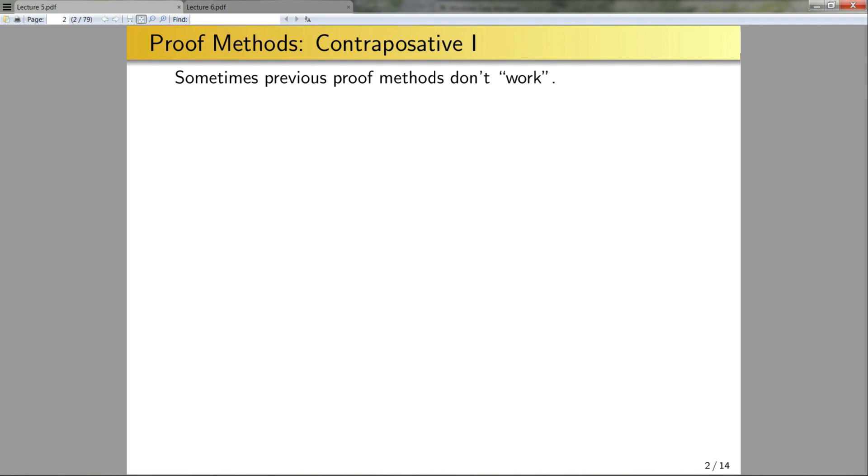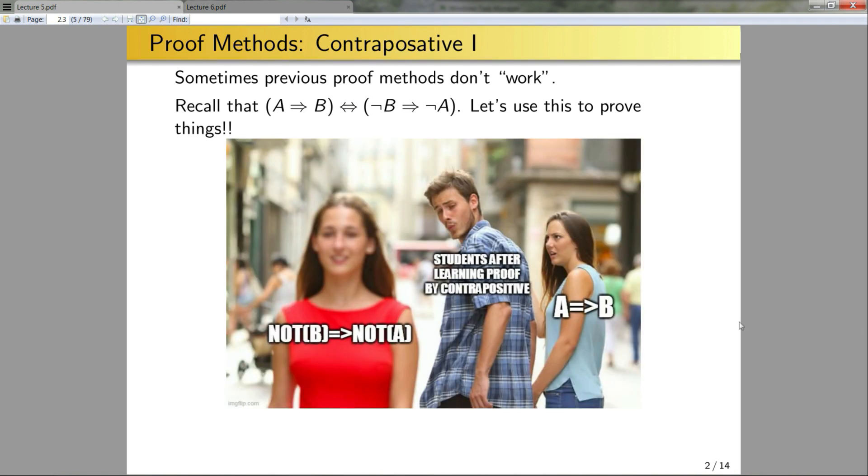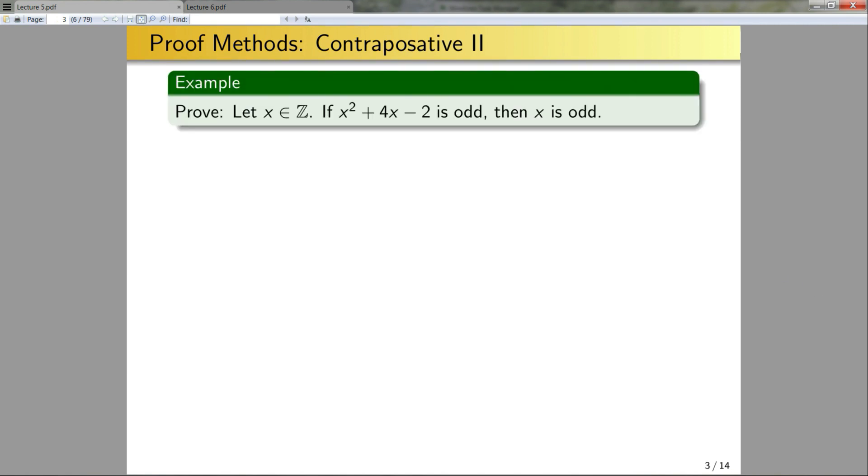So proof by contrapositive. Sometimes the previous methods don't quite work. I spend forever trying to use them to prove a given statement and I can't get it to work. Well recall that a implies b is equivalent to not b implies not a, so we can use this to prove things. Let's go through an example of proof by contrapositive. Let x be an integer. If x squared plus 4x minus 2 is odd, then x is odd. Before I try to prove this, let's formally define what I mean by odd. Recall that an odd integer is an integer of the form 2n plus 1 where n is an integer.